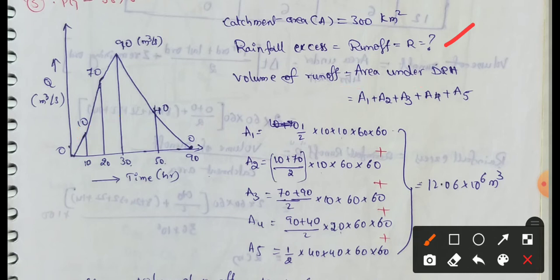Because this is a non-linear shape, we have to find out each area. This is a direct runoff hydrograph with non-linear shape.